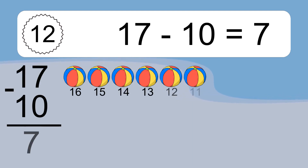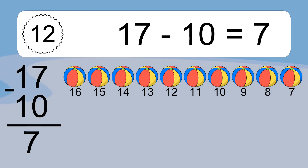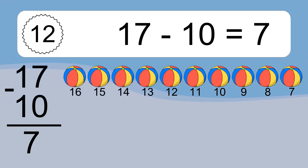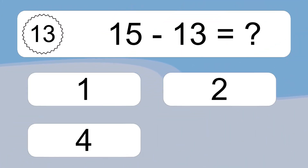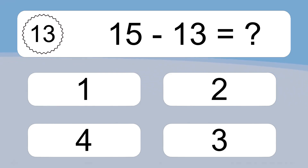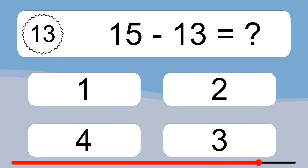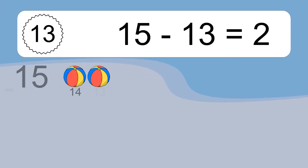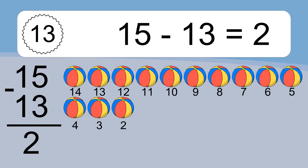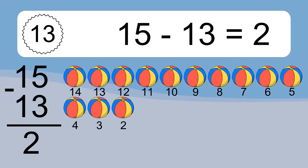17 minus 10 equals what? 17 minus 10 equals 7. Let's count it: 16, 15, 14, 13, 12, 11, 10, 9, 8, 7. 15 minus 13 equals what? 15 minus 13 equals 2. Let's count it: 14, 13, 12, 11, 10, 9, 8, 7, 6.